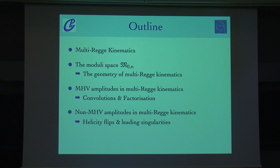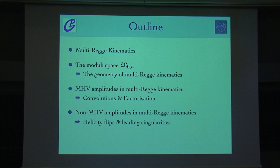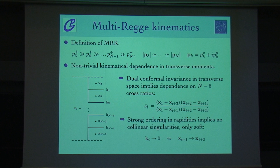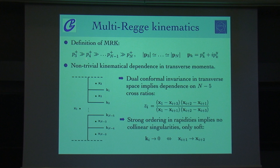The limit we want to talk about is the multi-Regge limit. I will briefly introduce multi-Regge kinematics, which Ben has already done this morning, and then I will talk about how this is connected to the geometry of the moduli space, and how we can get MHV amplitudes and also non-MHV amplitudes out of that. Multi-Regge kinematics is the limit where particles are widely separated in rapidity, or equivalently, there's a hierarchy among the outgoing dust-like momenta. The transverse components are considered to be complexified and all of the same size.